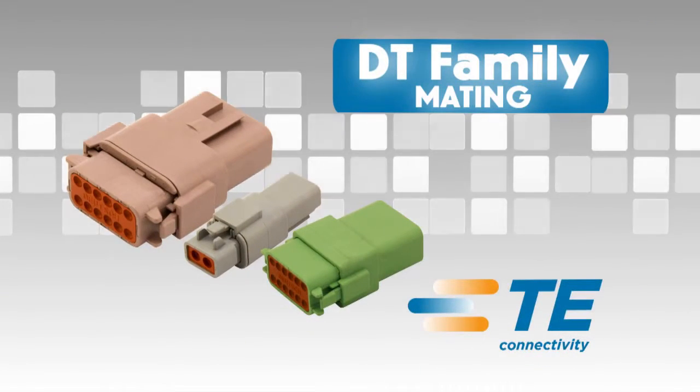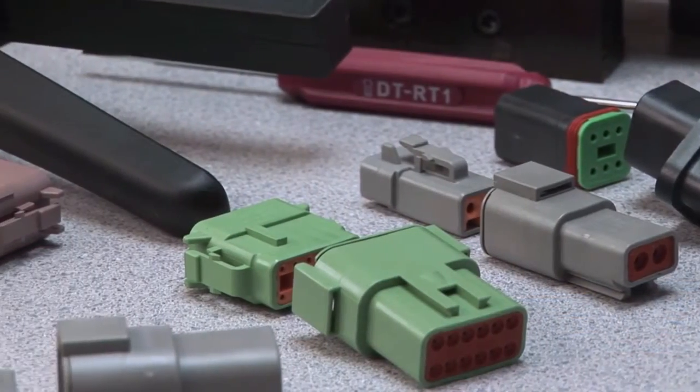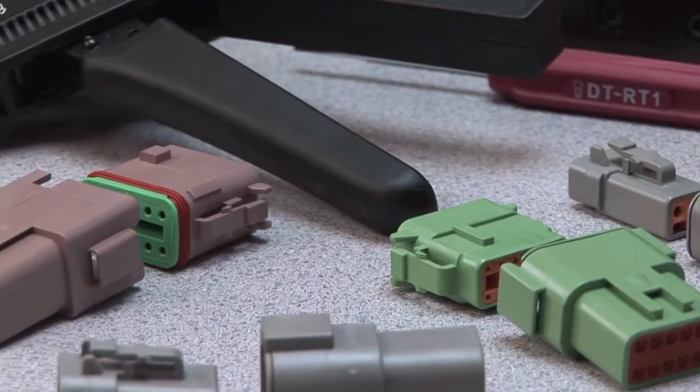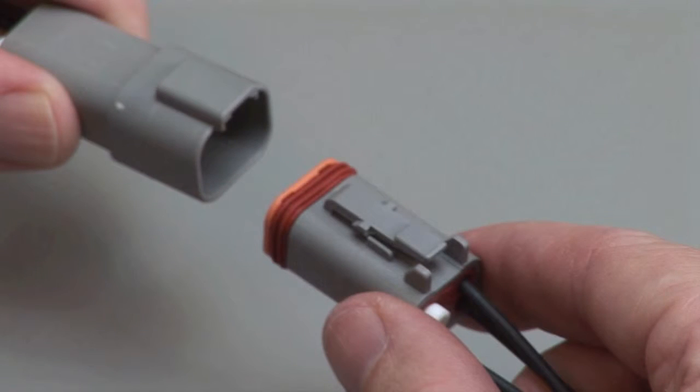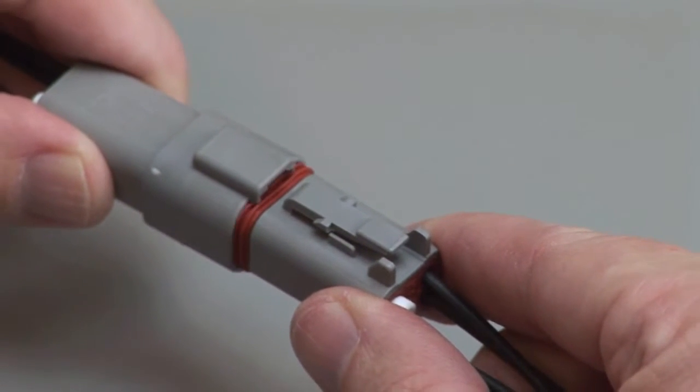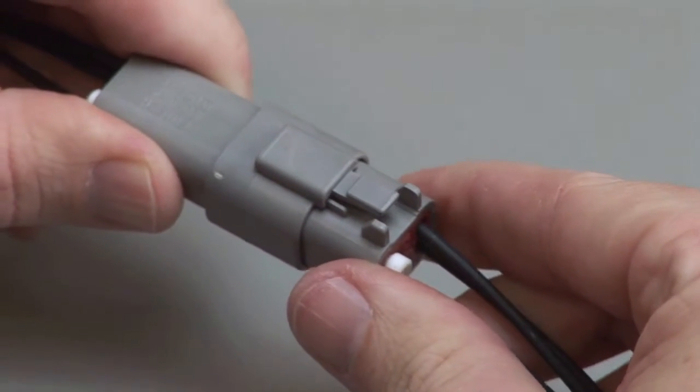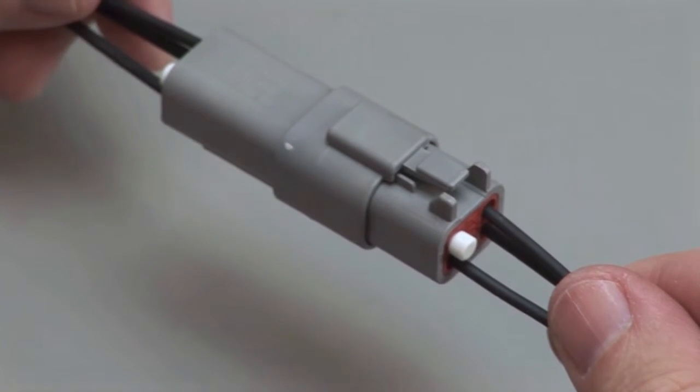DT Mating. All DT connectors are designed to be mated and unmated by hand. When mating a DT series, grasp the connector by the connector body and line up the exterior locking latch. Push the plug and receptacle together until you hear a click and the exterior locking latch is seated in place.